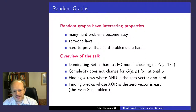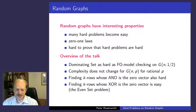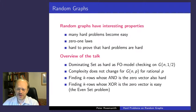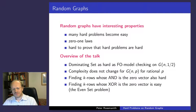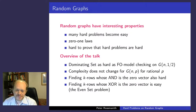I will prove that dominating set is hard on random graphs. When I say hard, I can show that it's as hard as first-order model checking, which we can assume is a hard problem — so it's again only a relative result. It's also a robust result: if we change the probability from one half to some other constant probability, the complexity stays the same.